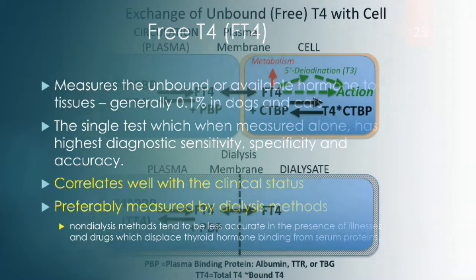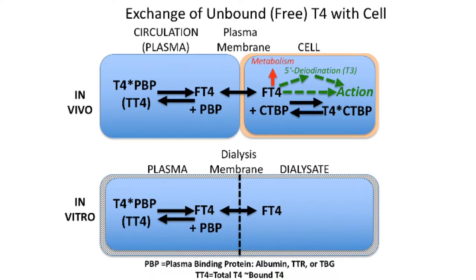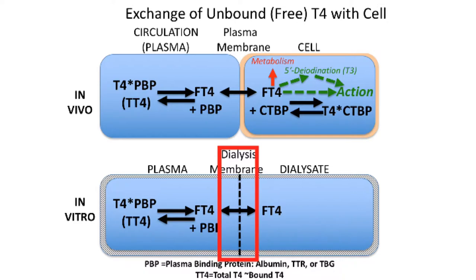Let's compare what's going on in the circulation. In vivo, we have plasma binding proteins that are reversibly associated with total T4 and lead to a small fraction — one part in a thousand generally — of free T4. This is the fraction that can then penetrate the cell membrane, lead to all the biological effects, the metabolism, and the action. What we're trying to do with a dialysis procedure is use a semipermeable membrane that will allow the free fraction to permeate or dialyze across it.